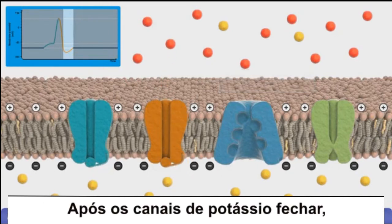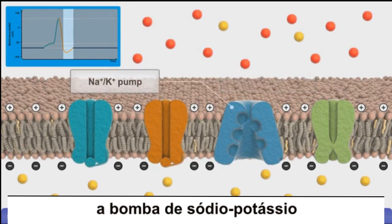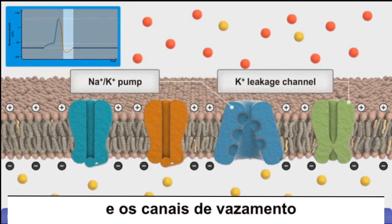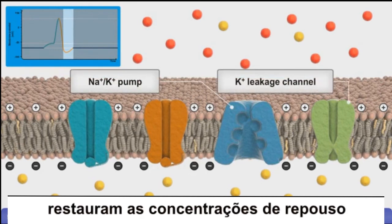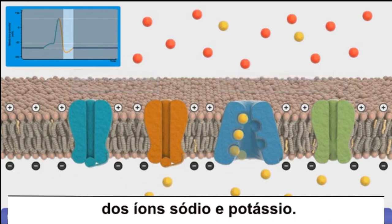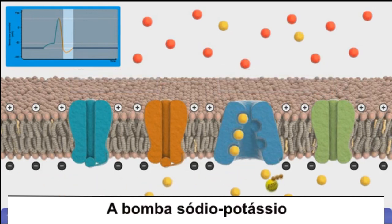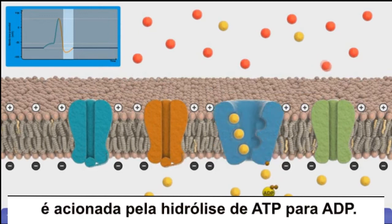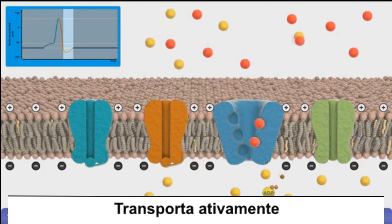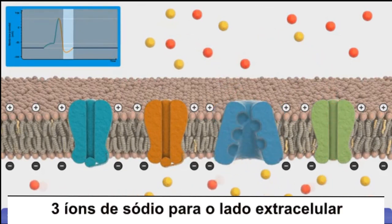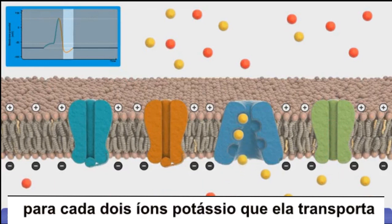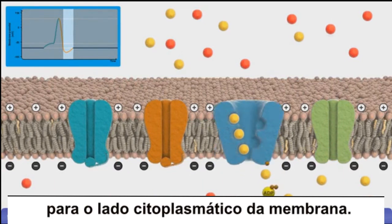After the potassium gates close, the sodium-potassium pump and leakage channels restore resting concentrations of sodium and potassium ions. The sodium-potassium pump is driven by the hydrolysis of ATP to ADP. It actively transports three sodium ions to the extracellular side of the plasma membrane for every two potassium ions that it transports to the cytoplasmic side, returning the plasma membrane to a resting state of minus 70 millivolts.